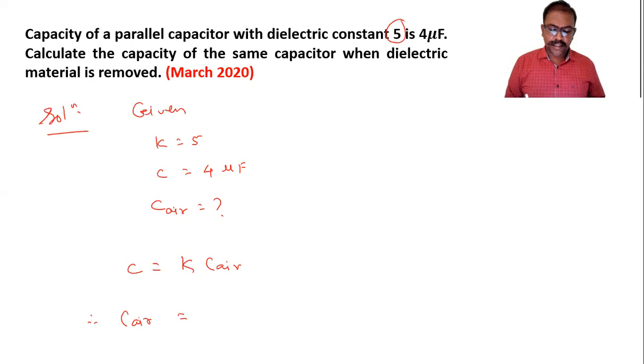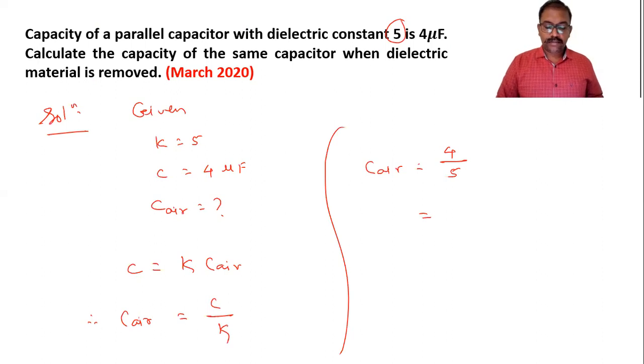So capacity with air is equal to this capacity, 4 microfarad, divided by K which is 5, so that gives us 0.8 microfarad. So this is the capacity when we use air as a dielectric material by replacing this dielectric material.